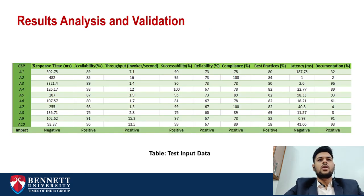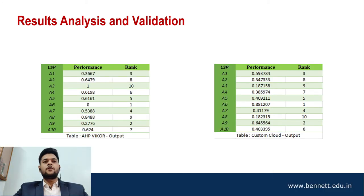Results analysis and validation: here is a test input data comparing 10 CSPs on 10 attributes with impact against each. The negative impact means the lesser the number, the more effective, and vice versa. After running the algorithm, we get the output shown in the right-hand side table. Here, A6 gets the first rank, A9 gets the second, and A1 gets the third rank.